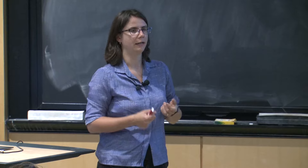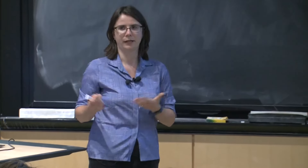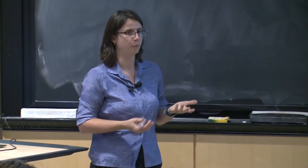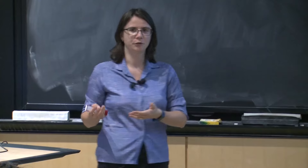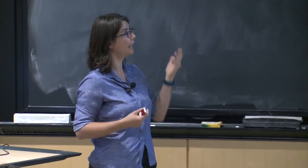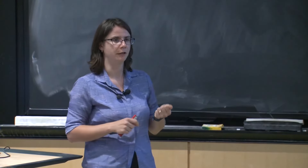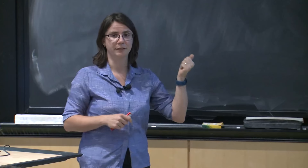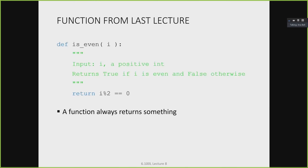The doc string is kind of a contract between the person who writes the function and the person who uses the function. In the contract, the person who writes the function says: this function is going to take these inputs, and I guarantee this function works correctly when you give me inputs of these types with these restrictions. You also state what the function is going to do, and what the function will return.